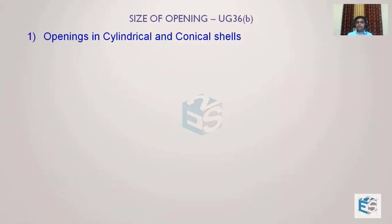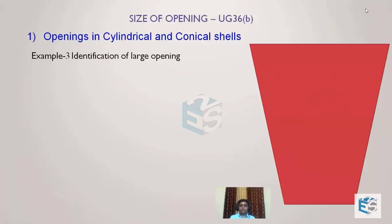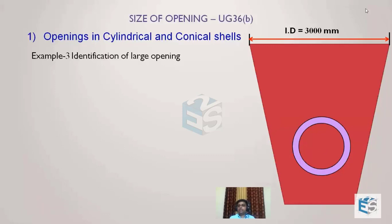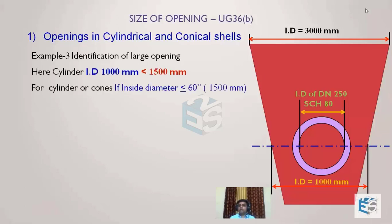Now let's look at an example with a conical shape. For a cone, an important question is: which diameter should we use? The code gives clear guidelines. Consider a cone with a maximum diameter of 3000mm, but the nozzle is located where the local diameter is 1000mm. We do not use 3000mm; instead, we draw a centerline at the nozzle location and use the cone diameter at that position — which is 1000mm.